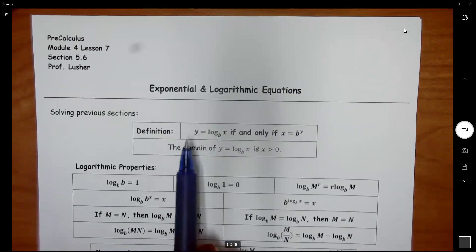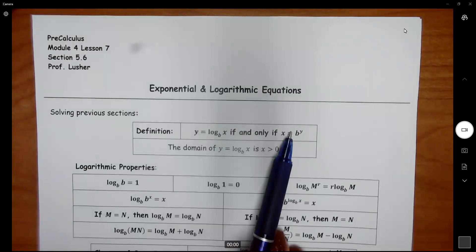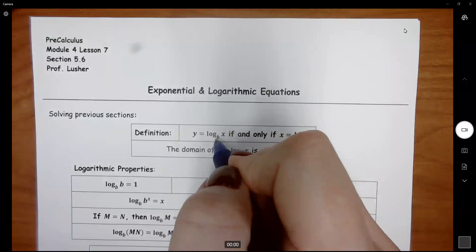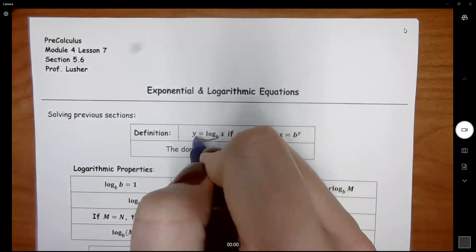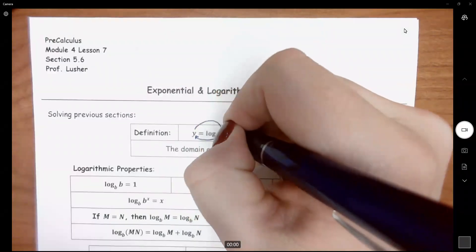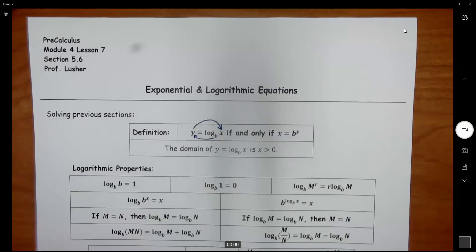So by definition, I can go back and forth between a log equation and an exponential equation. If I go from log to exponential, we go base to equals, so b to the y power, and then it's going to equal whatever that big number is in that log function.